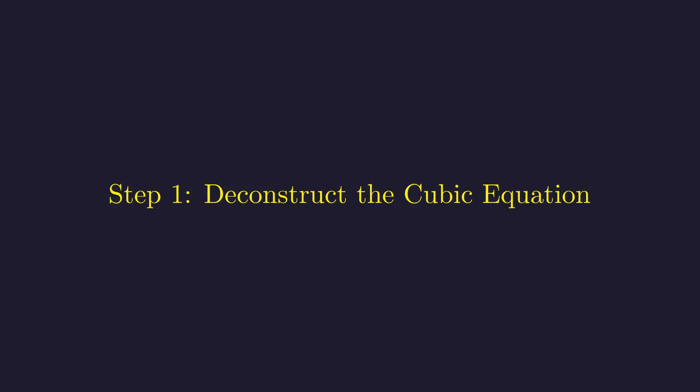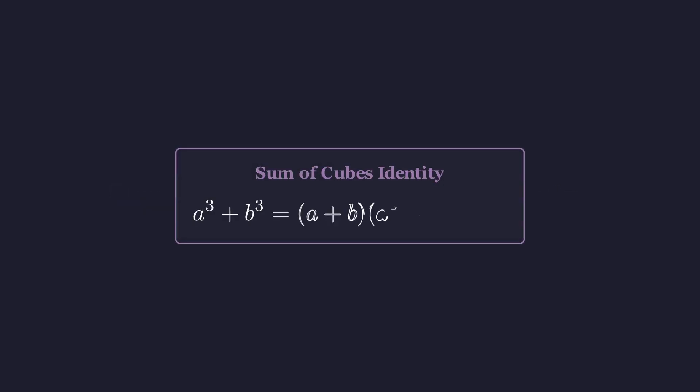Let's start by unpacking that sum of cubes using a classic algebraic identity. You might remember this identity from algebra. a cubed plus b cubed factors as a plus b times the quantity a squared minus a times b plus b squared.